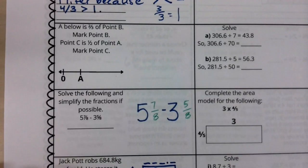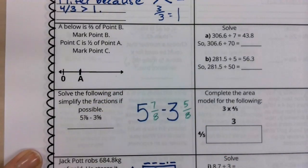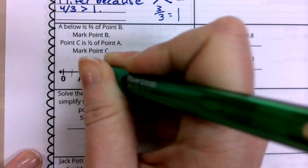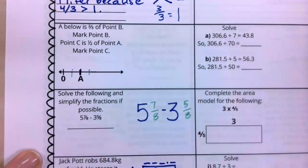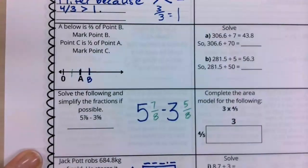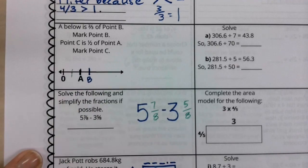Now our next question says, A below is two thirds of point B. So the first thing we need to do is mark where point B is. Well, if this is two thirds, then this might be one third. If we had one third, two thirds, this would be three thirds, right? So here boys and girls is where point B should be. It's going to be just a third away. Here's a third, here's a third. That's how I know where to put point B.